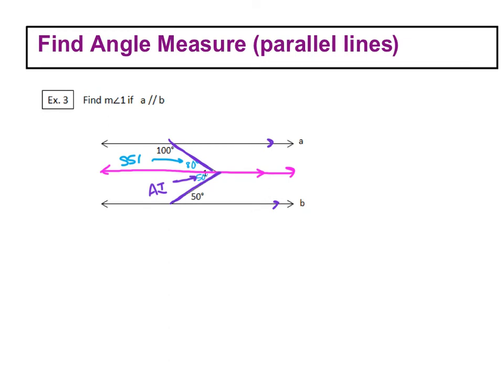So what we have is the measure of angle 1 is going to be equal to that 80 degrees that we just got from our same side interior, plus that alternate interior angle of 50 degrees. So the measure of angle 1 is equal to 130 degrees.